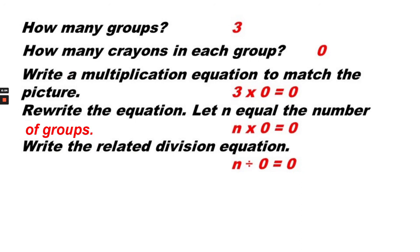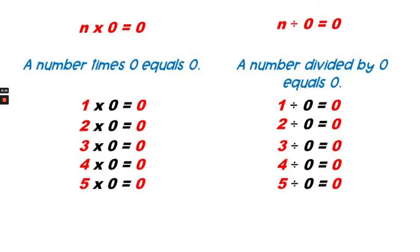n divided by 0 equals 0. So here's our new rule. n times 0 equals 0 and n divided by 0 equals 0.